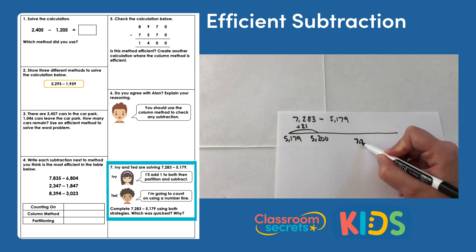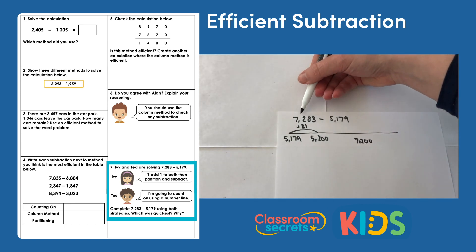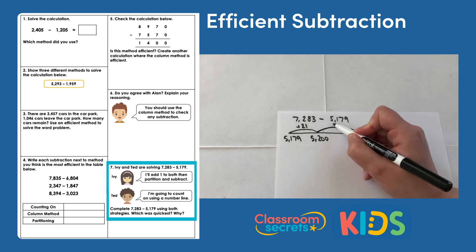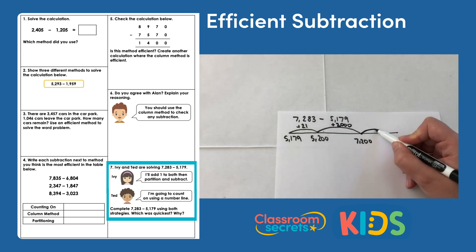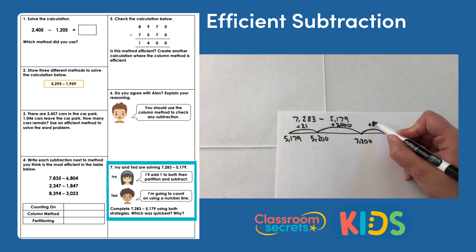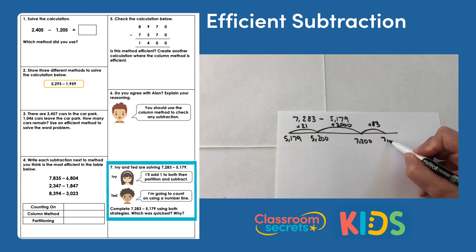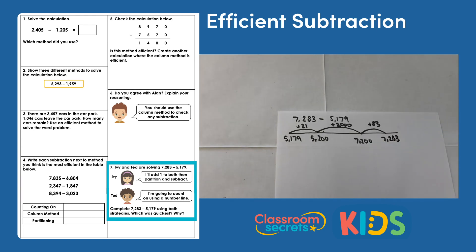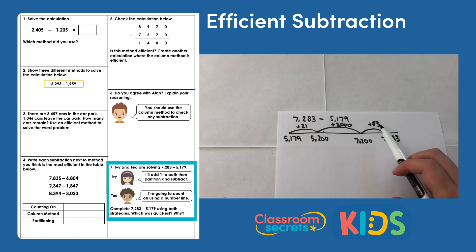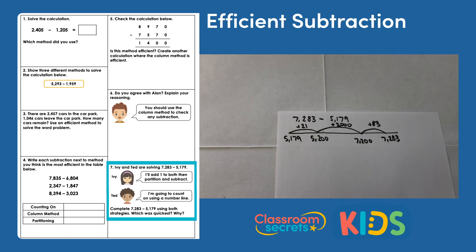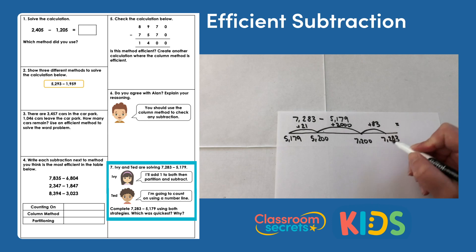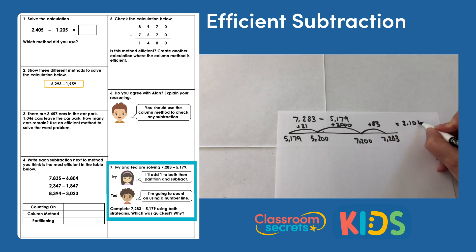My next jump takes me to 7,200 — near our target — adding 2,000. My final jump adds 83 to reach 7,283. The last step is to add all three jumps together: 21 plus 2,000 plus 83 equals 2,104. Adding them together can be a little tricky in your head once you've worked out the jump sizes.